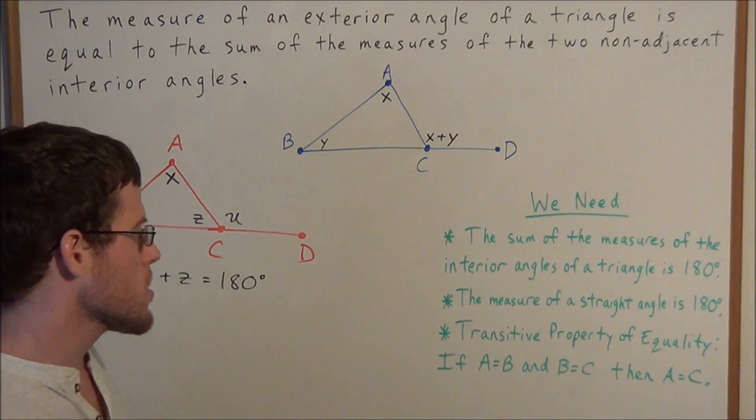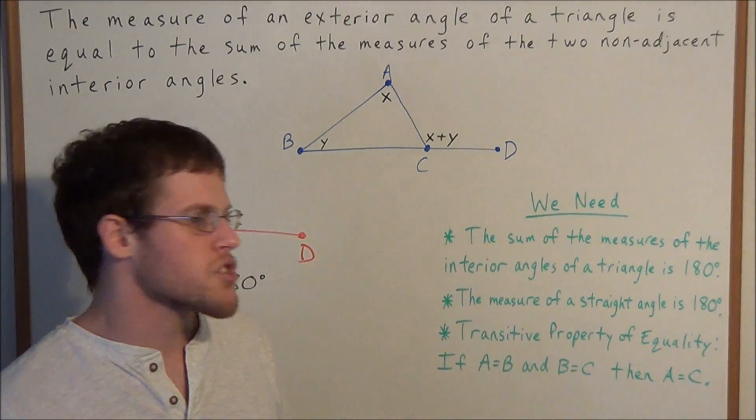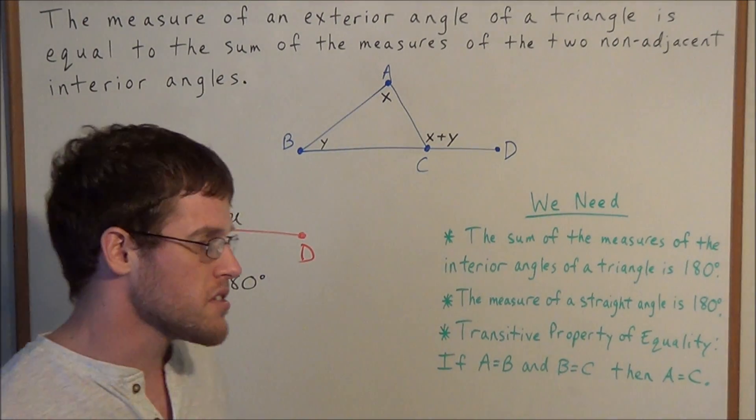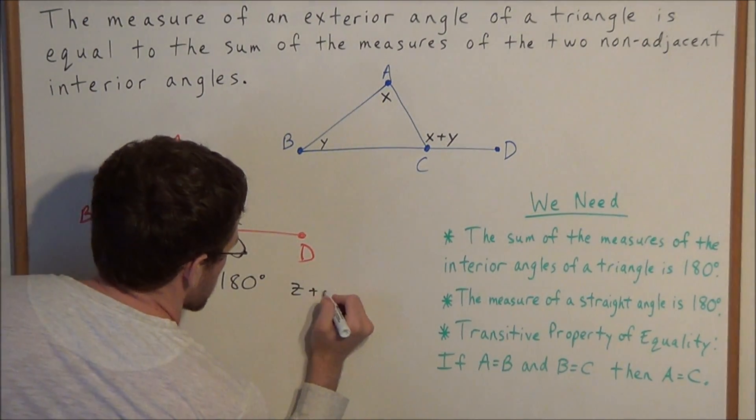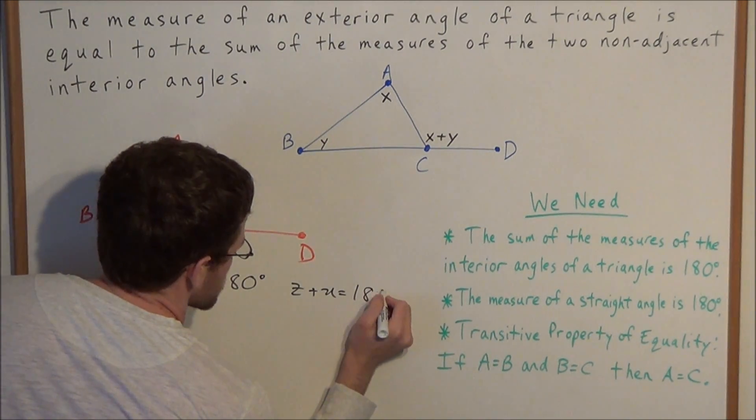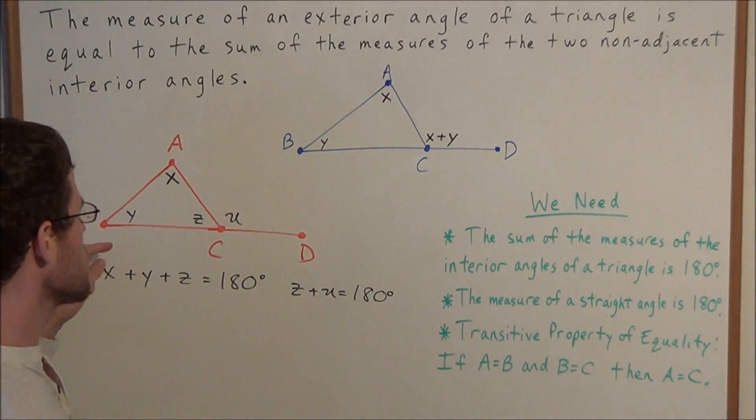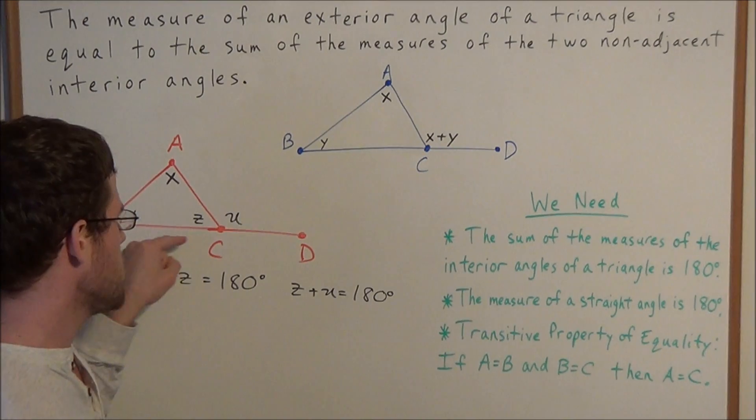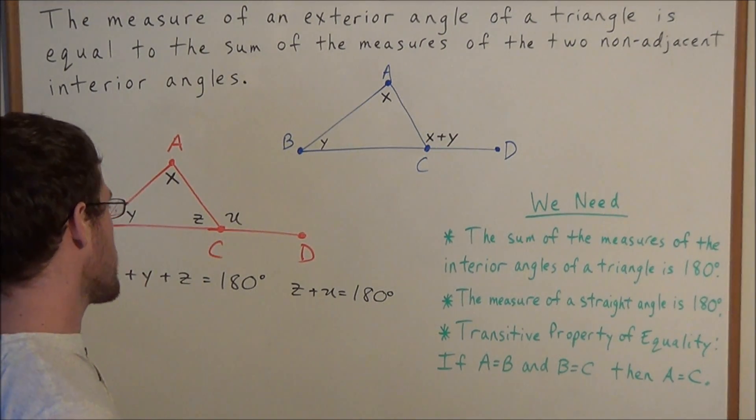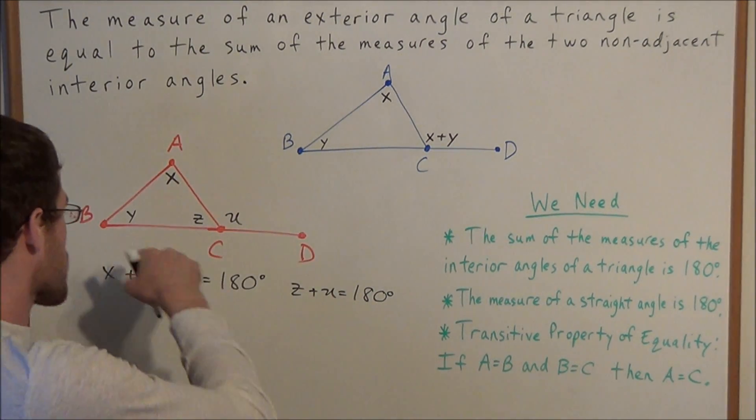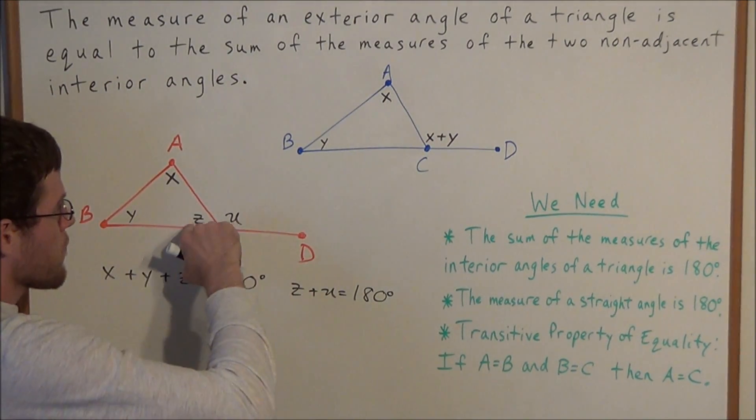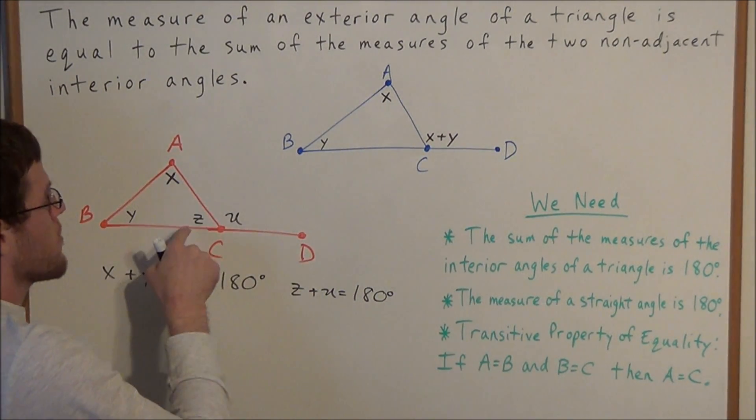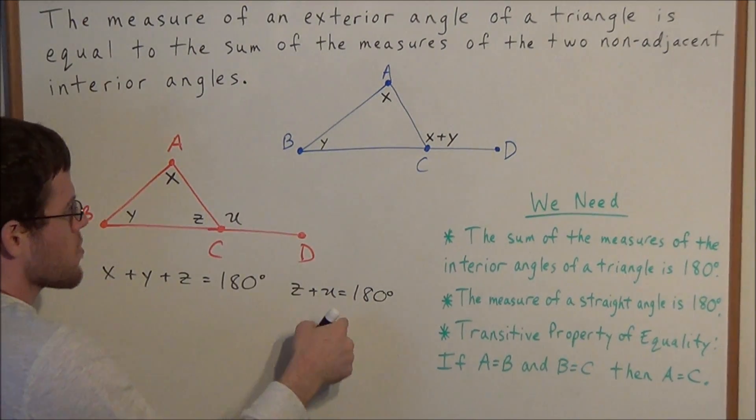Now using the Euclidean postulate, the measure of a straight angle is 180 degrees, which allows us to set up the second equation: Z plus U equals 180 degrees. Remember, we assumed that we were extending line segment BC to create line segment BCD. So we have a straight line, and angle BCD forms a straight line. So we have Z plus U equals 180 degrees.